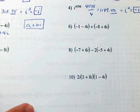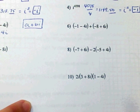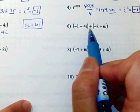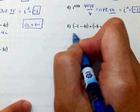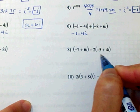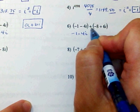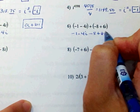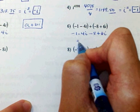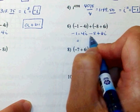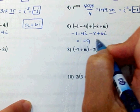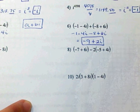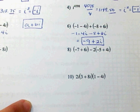Number 6, same thing. Just because you have two sets of parentheses does not mean you multiply. I'm not multiplying times anything, so I'm going to rewrite the first set without parentheses. The second one has a plus, so I bring that down as well: negative 8 plus 6i. Combine like terms: negative 1 minus 8 is negative 9; negative 4i plus 6i is plus 2i. That is a complex number.